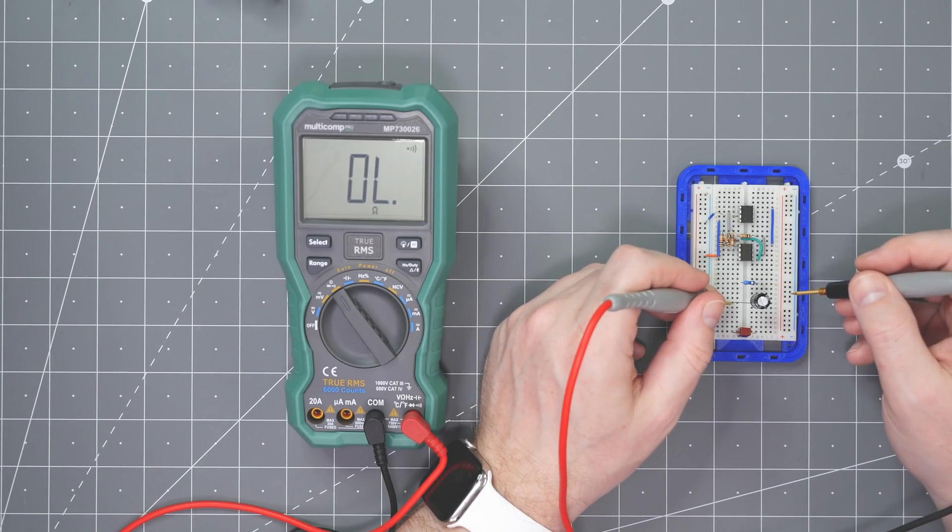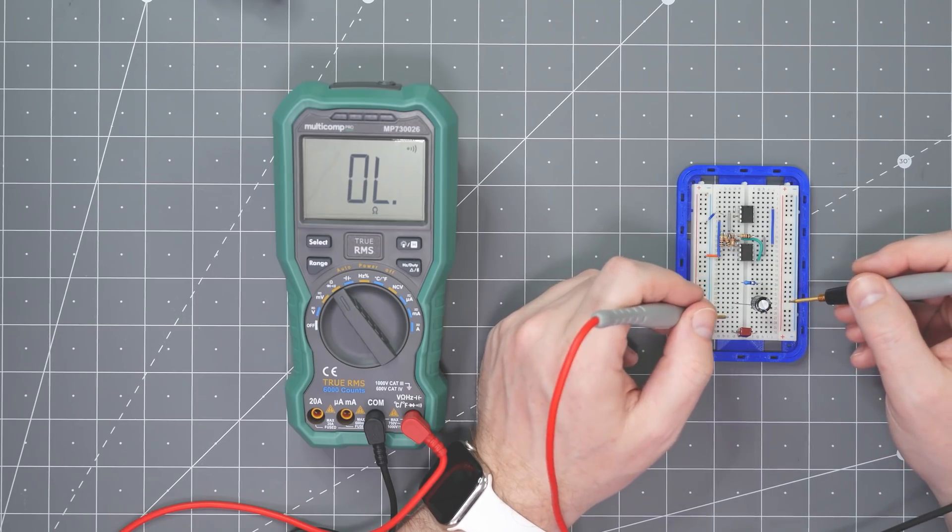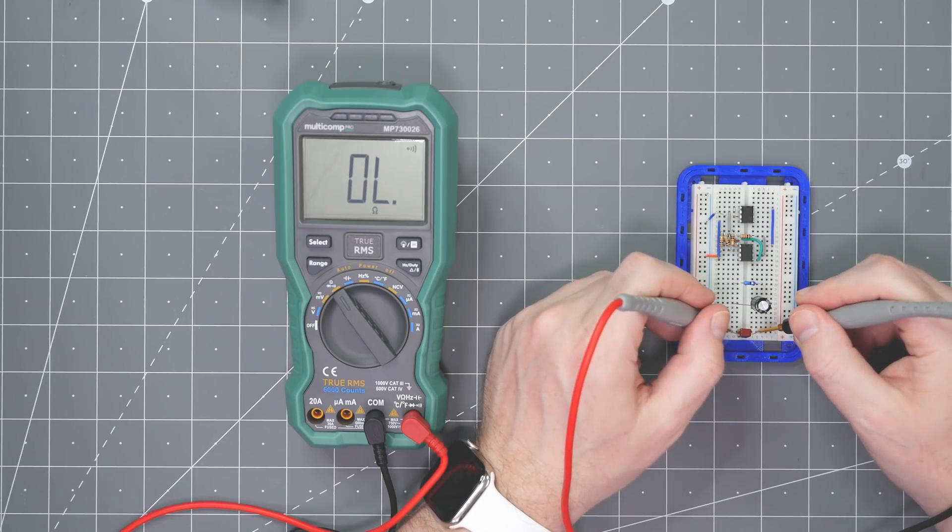Now, pay very close attention when I measure this electrolytic capacitor. See, when I first touched the lead, the meter beeped, but then it measured and opened. But, when I measured this film capacitor, the meter only displays open.